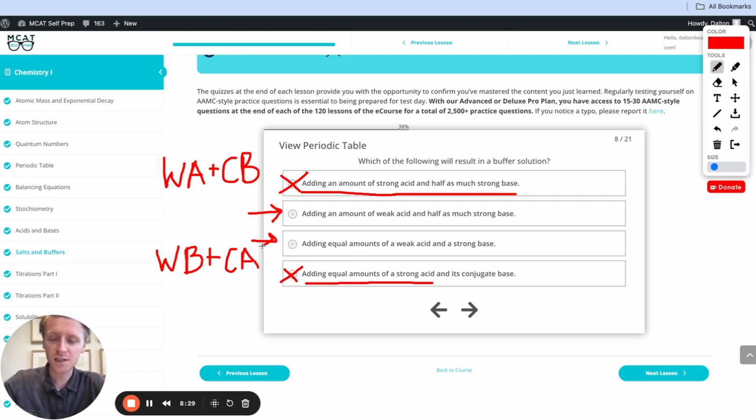Well, that strong base is going to yank all the protons off of all those weak acids. So we started with weak acid, but we'll be left with only the conjugate base. And that's not what we want because we don't have that balancing act there. So this is going to be incorrect.